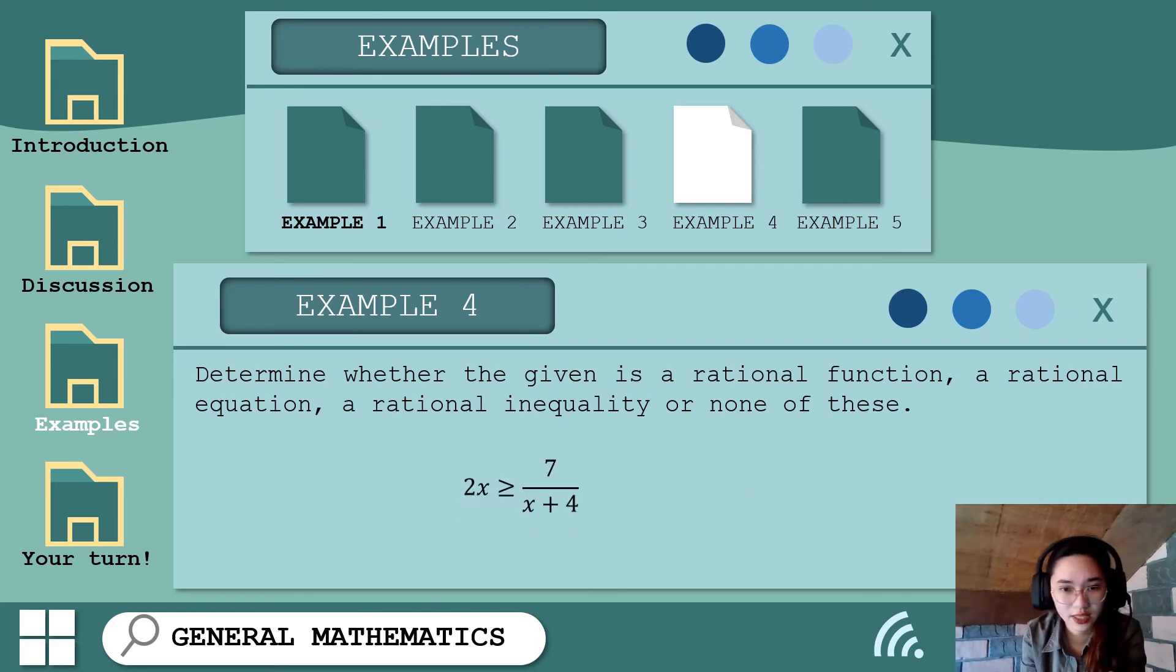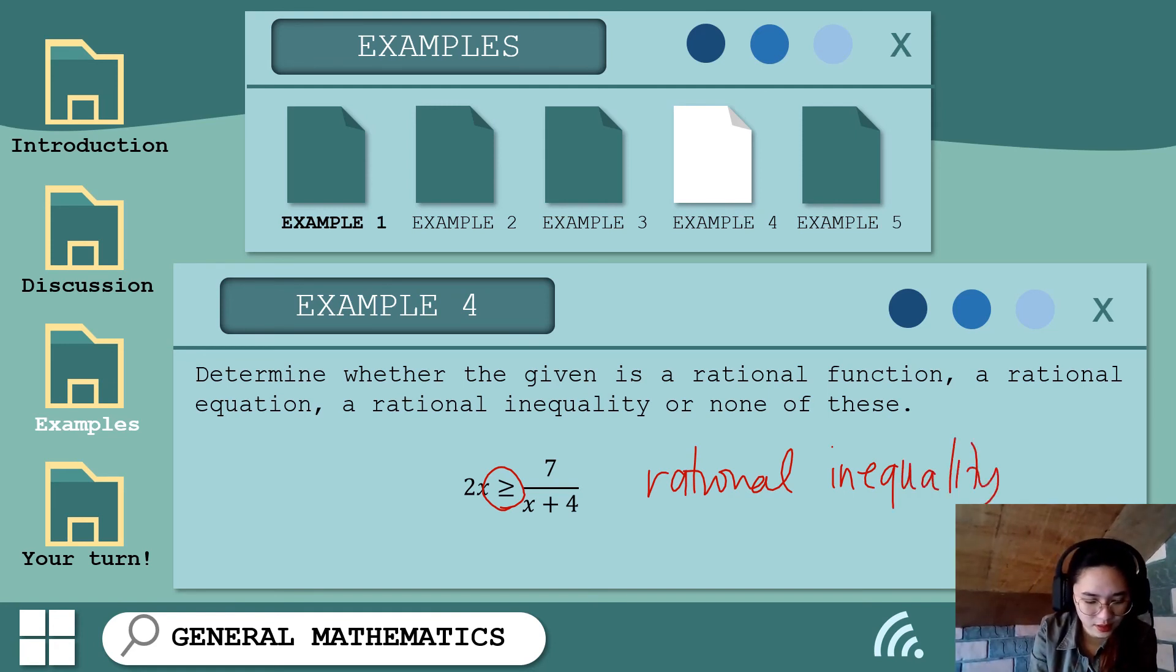Next: 2x is greater than or equal to 7 over x plus 4. Yan, meron po tayong rational expression, at ang kanyang symbol is greater than or equal, or that is an inequality sign. So ibig sabihin, ito po ay rational inequality. Isa pa.